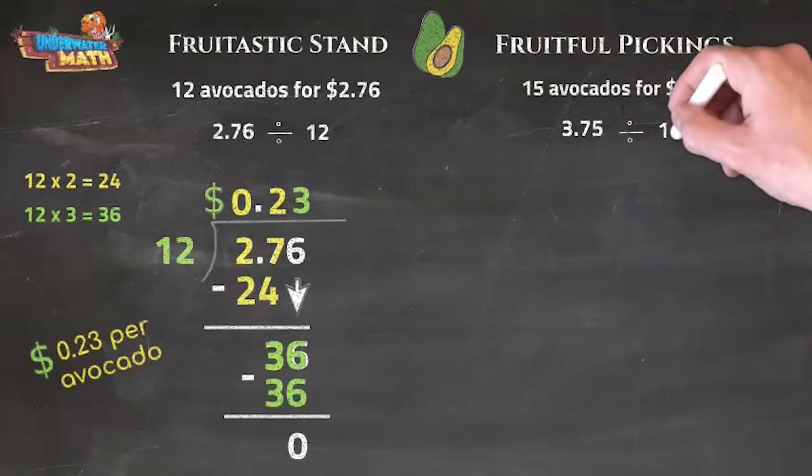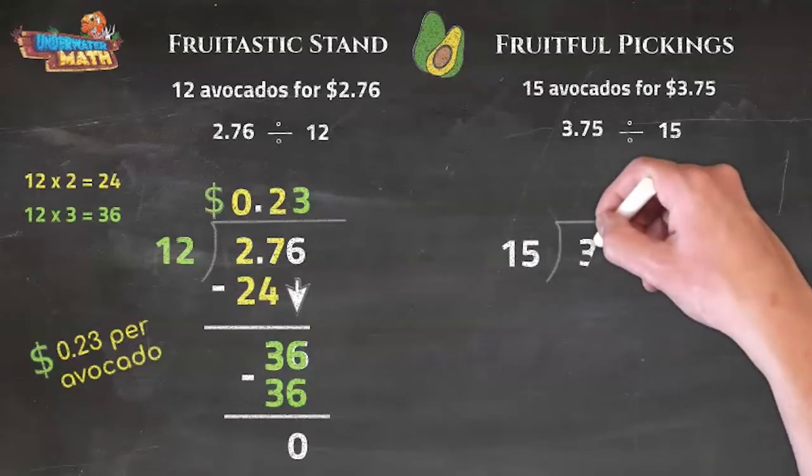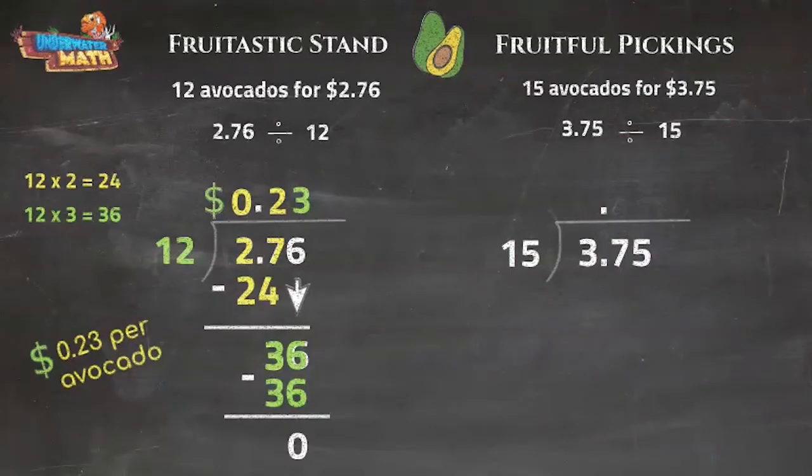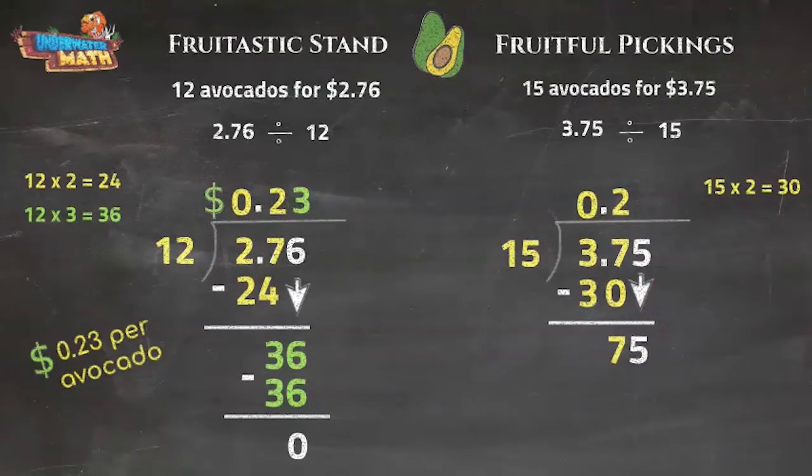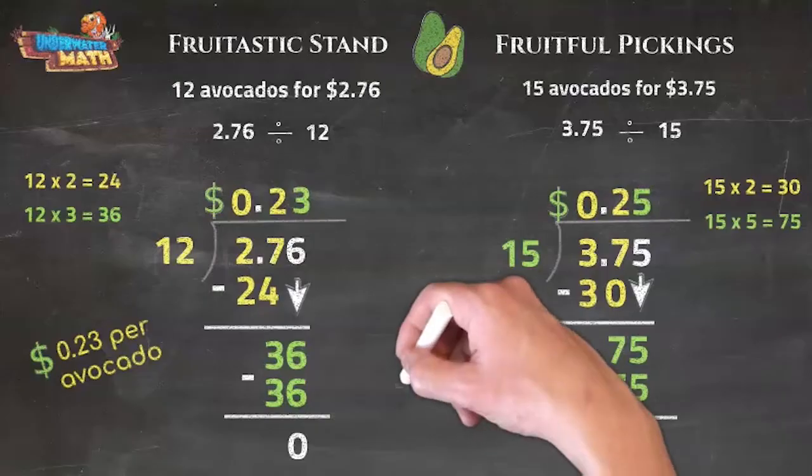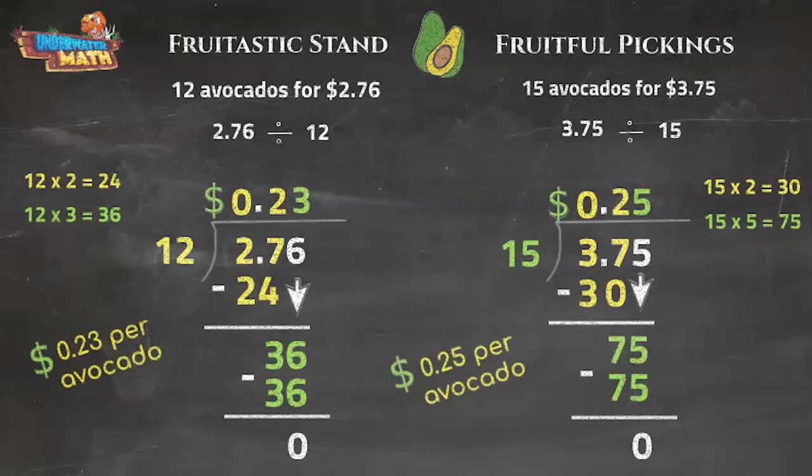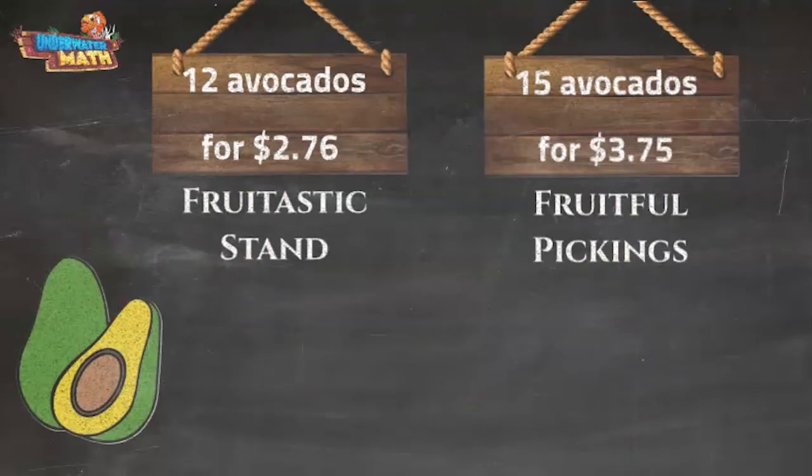We will do the same for Fruitful Pickings. Bring that decimal point straight up and divide away. According to our long division, Fruitful Pickings charges 25 cents for each avocado.